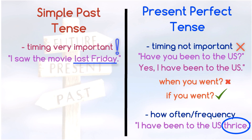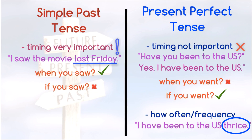To say 'I saw the movie' makes little sense unless you specify when — for example, 'I saw the movie last Friday.' If the intention is merely to convey the fact of having seen the movie, just use the present perfect tense: 'I have seen the movie.' Note that 'I have seen the movie last Friday' is wrong.